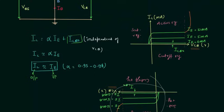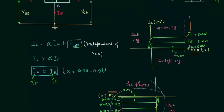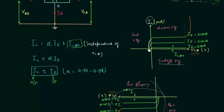In the cutoff region, both diodes are reverse biased and the transistor remains off — we can consider it as an open switch or logical off. In the saturation region, both diodes are forward biased and we can consider the transistor as a closed switch or logical on. The collector current IC starts to reduce and becomes zero in the saturation region.